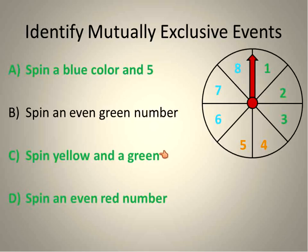Spinning a yellow and a green. You can't do that at the same time. And spinning an even number and a red. The probability of spinning a red is zero. It's still an event, but the probability would be zero. And you can't spin an even number and a red because there's no red at the same time. You can't spin a red at all. So that was sort of a weird one because there are no red numbers.